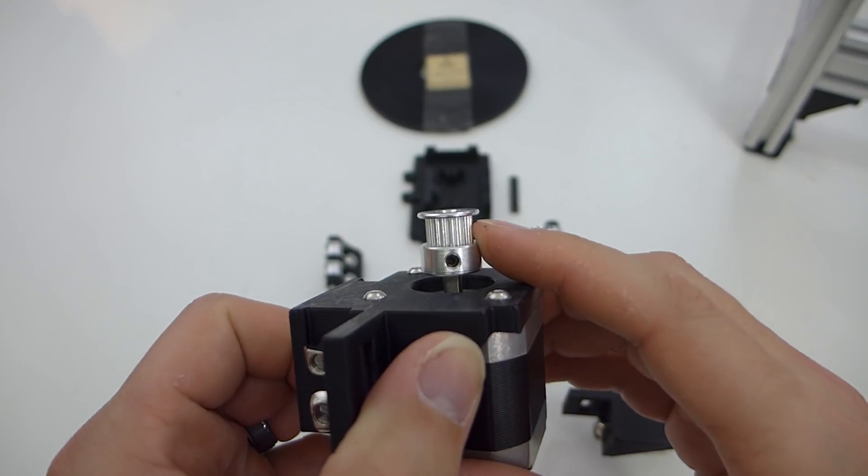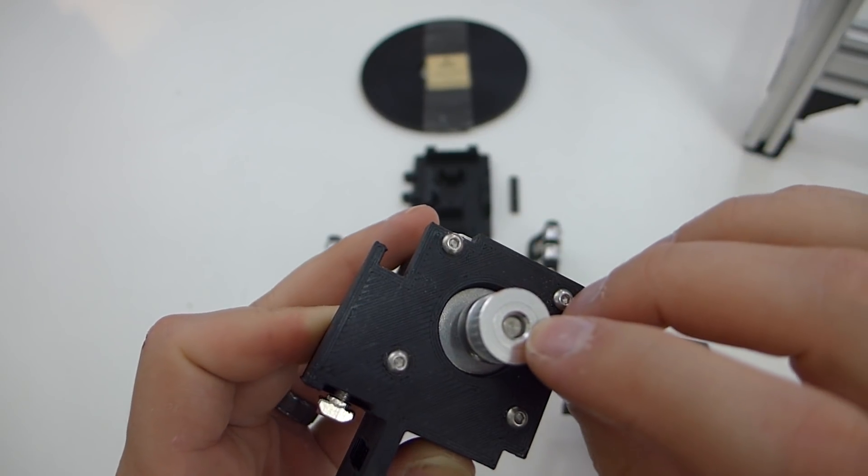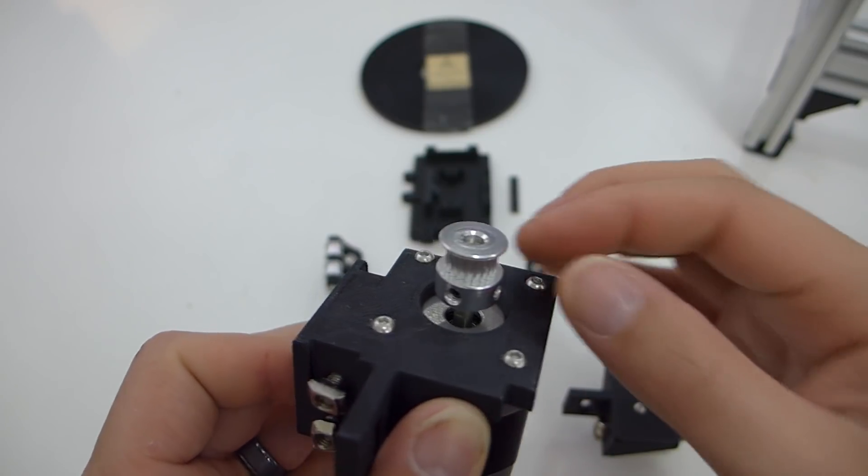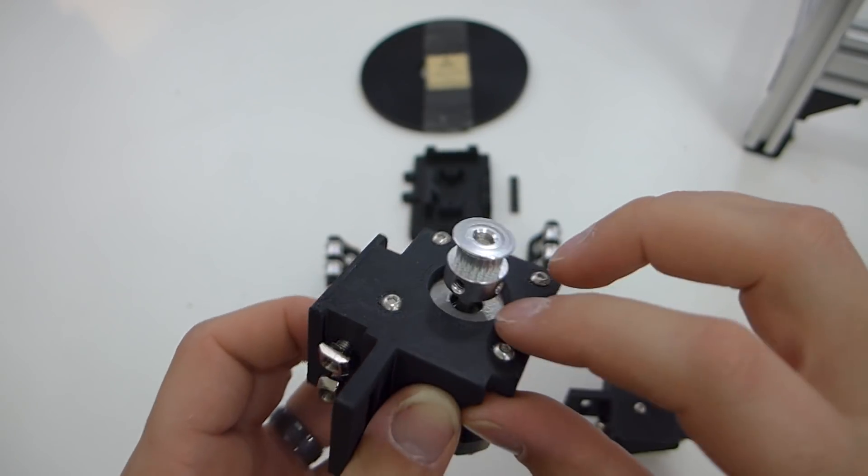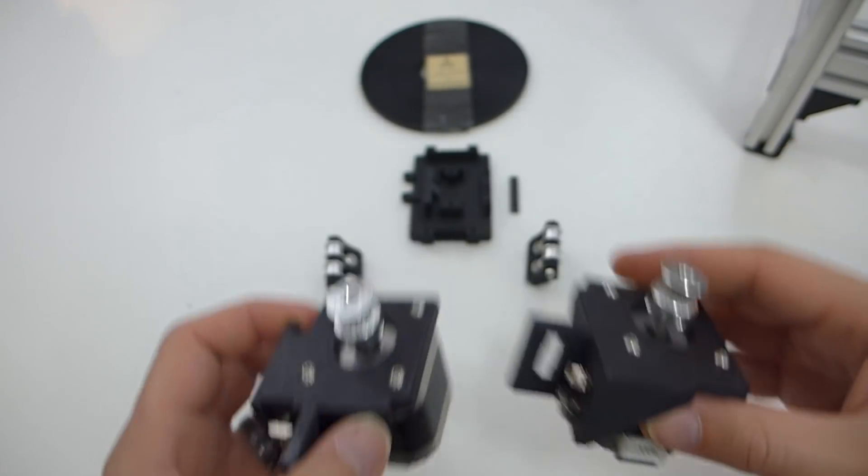I think I lined up the... These are the 20 tooth pulleys. Five millimeters for the rod in there. So that's... I'm sorry. These are three millimeter to snap on to the motors. Or to connect to the motors. So I have the two of those done.